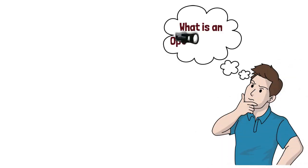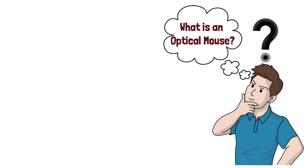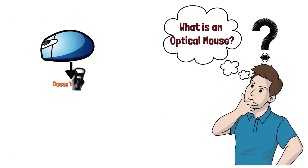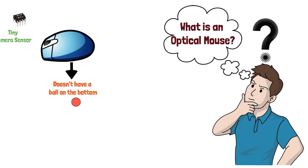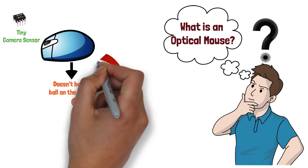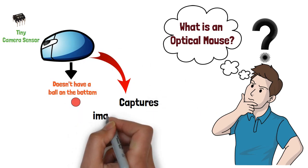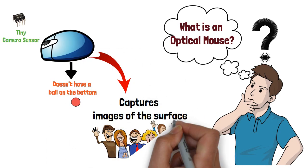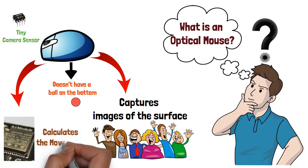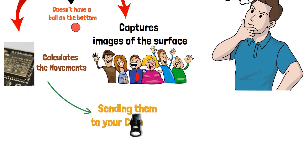What is an optical mouse? First things first, what exactly is an optical mouse? Unlike its older counterpart, the mechanical mouse, the optical mouse doesn't have a ball on the bottom. Instead, it uses a tiny camera sensor to detect movement. As you move the mouse, the sensor captures images of the surface, and the mouse's internal processor calculates the movements, sending them to your computer.